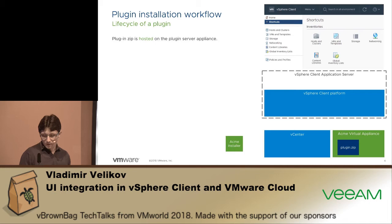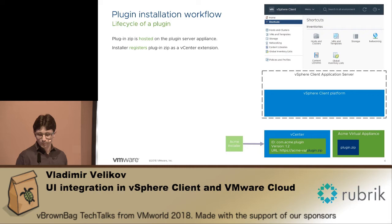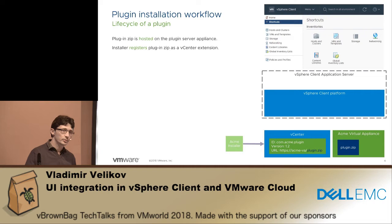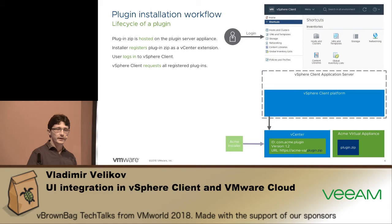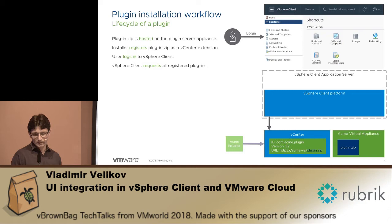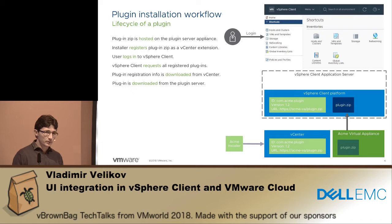First the plugin is hosted. Then when the administrator runs the installer, it would register an entry with the vCenter extension manager indicating there is a new plugin to be installed. The ID and version uniquely identify what this plugin is and there is a URL where to download it from. When the user logs in the whole process is triggered, and the client goes to all vCenters in the environment, checks the registration data from the extension managers, collects what plugins need to be fetched, and the plugin gets downloaded from this URL.